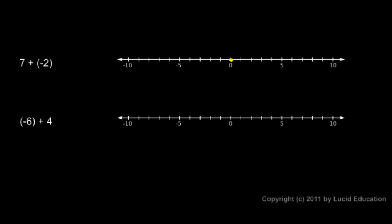We start at 0 and the 7 right here means we move 7 to the right, so that puts us there. And then the minus 2 means we move from there 2 to the left. So we go 7 to the right and then 2 to the left and we end up there at 5. So 7 plus negative 2 is equal to 5.